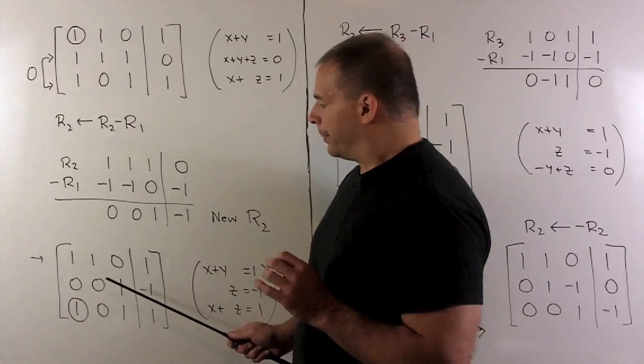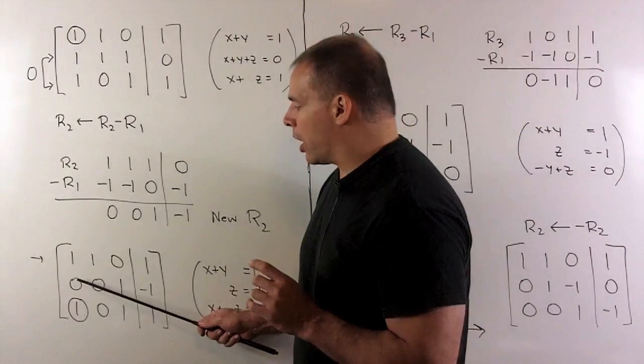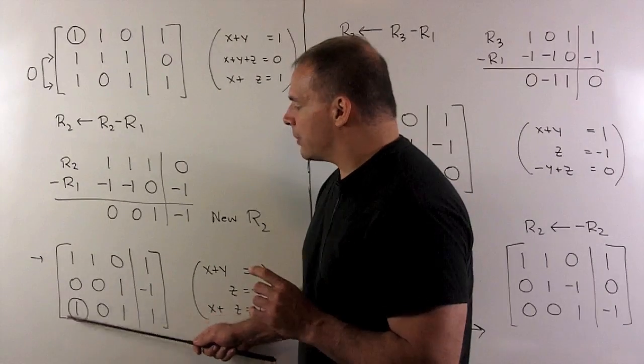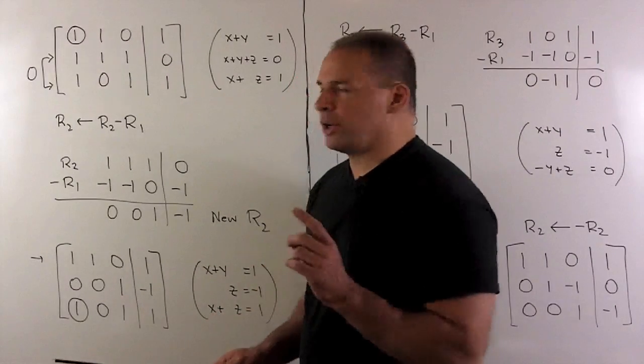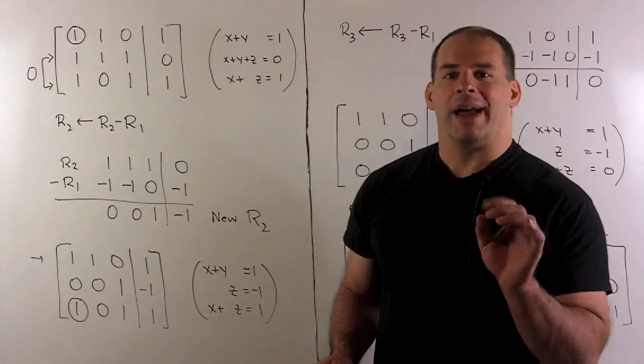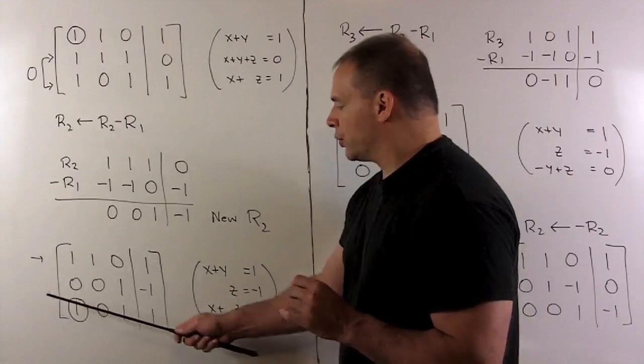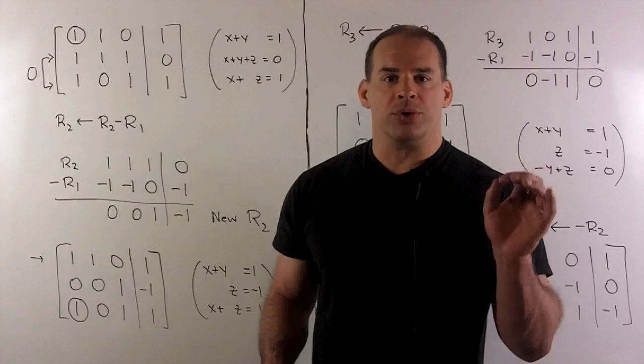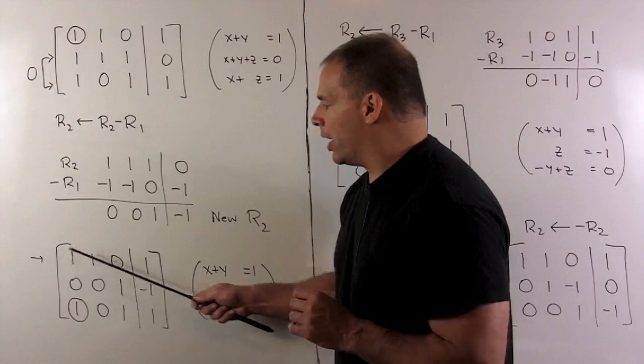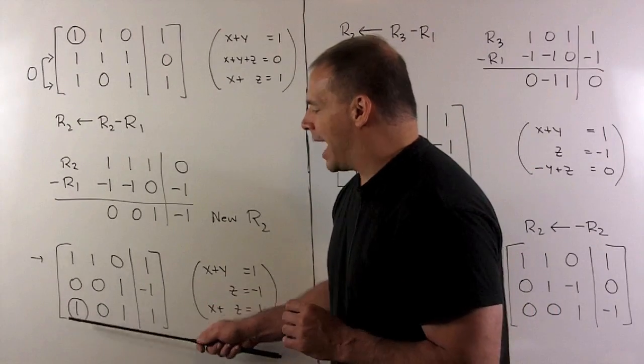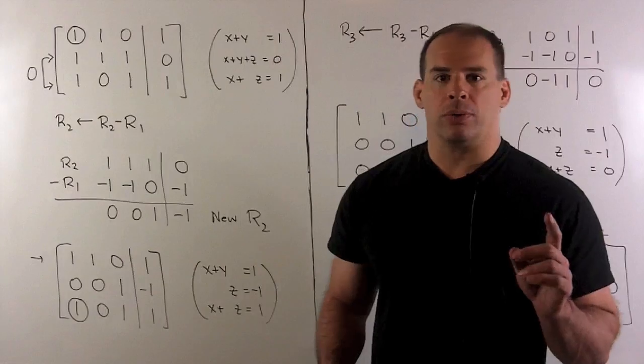Now, next step. We have a 1 and a 0. So our next step is going to be to turn this 1 here into a 0. So again, we're just going to take a multiple of row 1, add it to row 3. Same trick as for row 2. I'm going to take minus 1 times row 1, add it to row 3, and we get our new row 3.